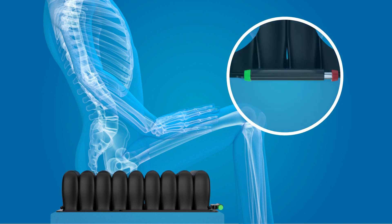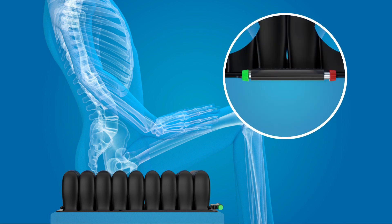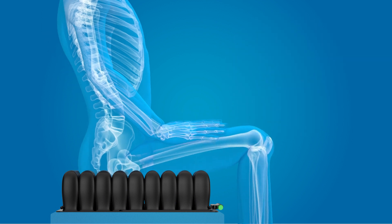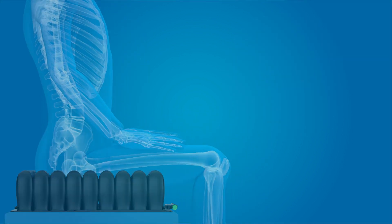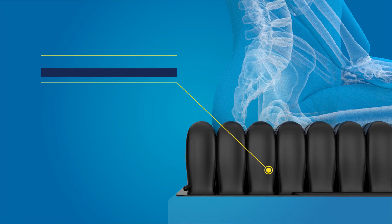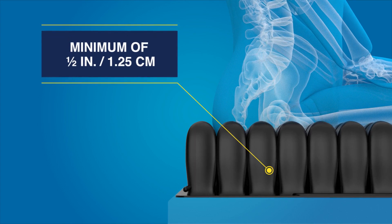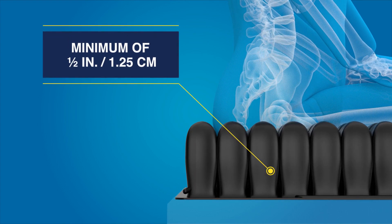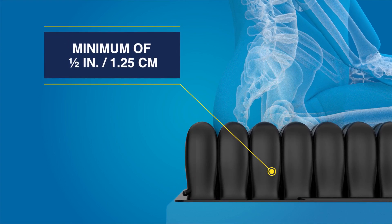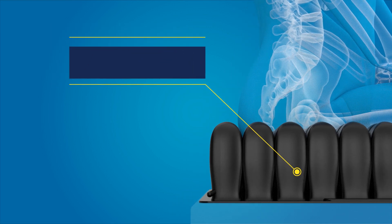Close the isoflow control by pressing the red knob in and lower the client's knees. Perform a hand check to ensure there is a minimum of one-half inch of air between the client's ischial tuberosities and the seat surface.